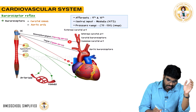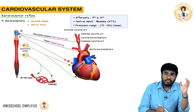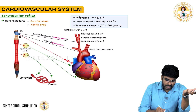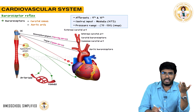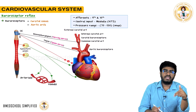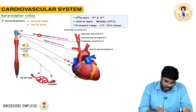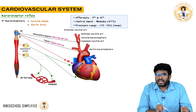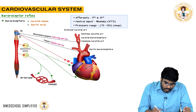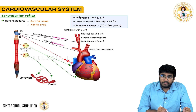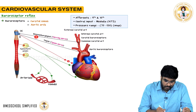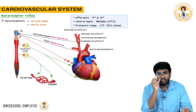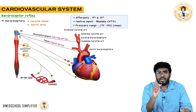Information about BP travels to the CNS via afferent nerves called Hering's nerve and the sinus nerve. Hering's nerve is a branch of the glossopharyngeal nerve (9th cranial nerve), carrying information from the carotid sinus. The sinus nerve is a branch of the vagus nerve, carrying information from the aortic arch. Both are sensory afferent nerves.